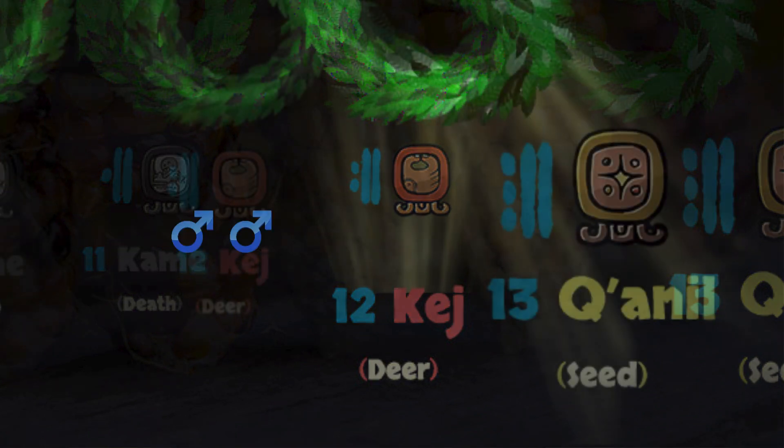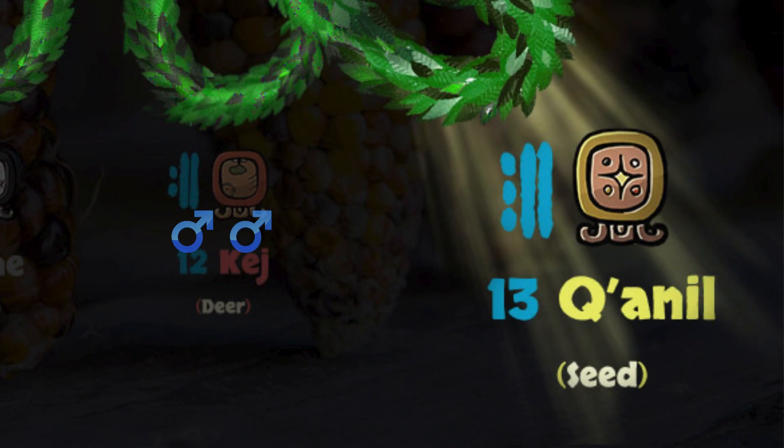And then we have Osh-Lahu Kanil, thirteen seed. Thirteen is masculine and Kanil is feminine. So two dominant Nawals against one masculine and one feminine — you can see a little bit more dominance of Kablaur Kereh over Osh-Lahu Kanil, the thirteen seed. And that's how we understand how the Nawals arrive in the Trecenas of the Maya calendar.